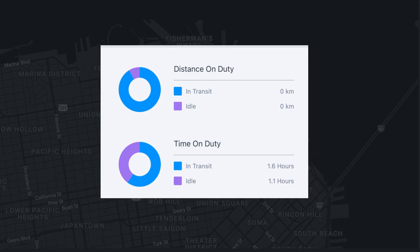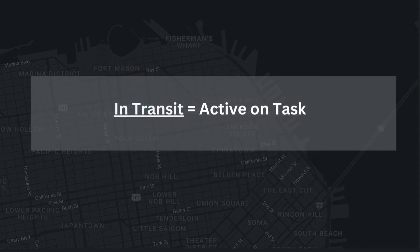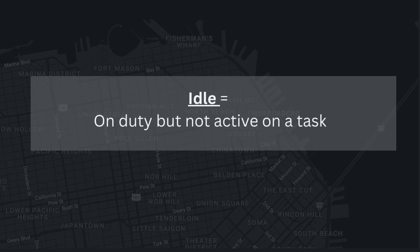The difference between in transit and idle is very simple. OnFleet considers in transit the time you spend while you are actively delivering on a task — in simple terms, when you select Start Task, you are considered in transit. The time you are on duty and not actively delivering for a task is considered idle.